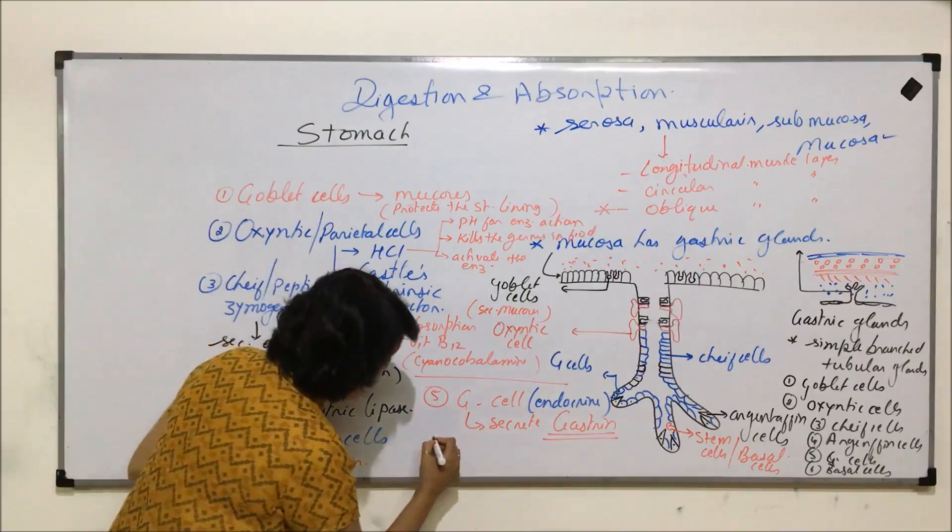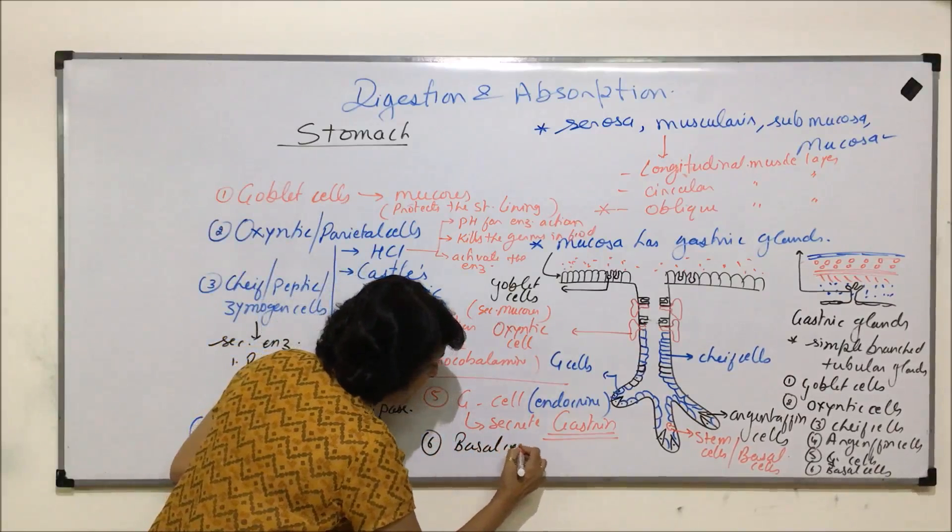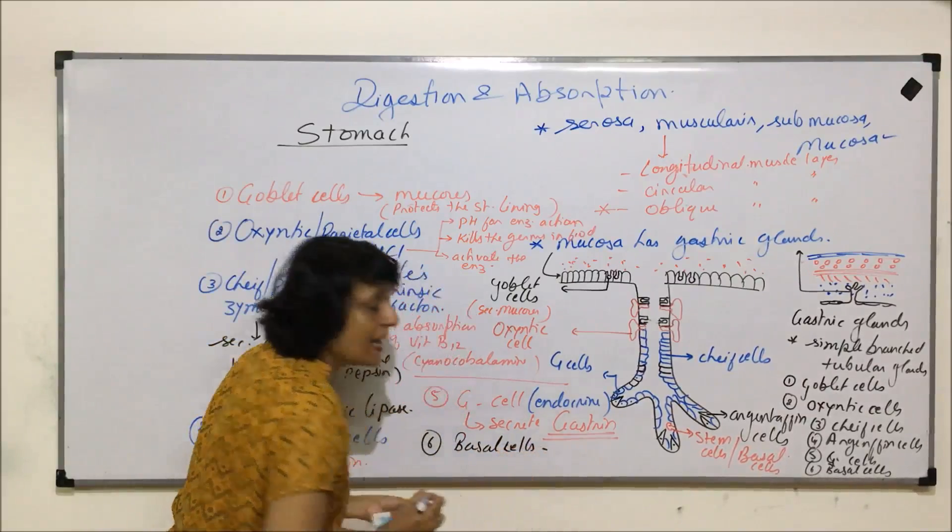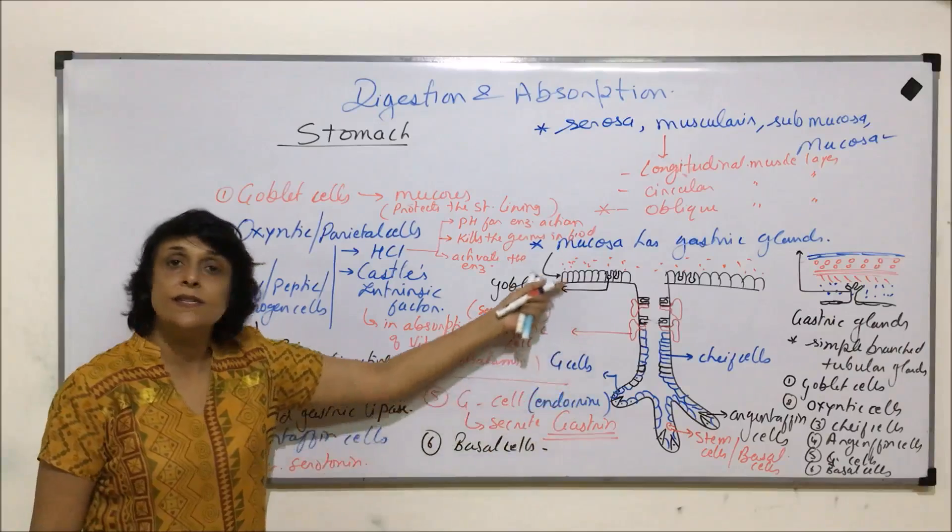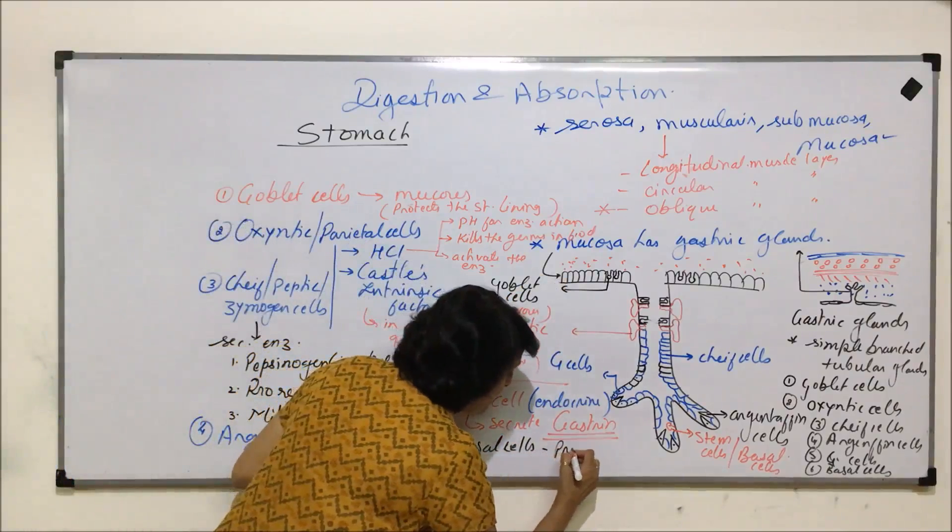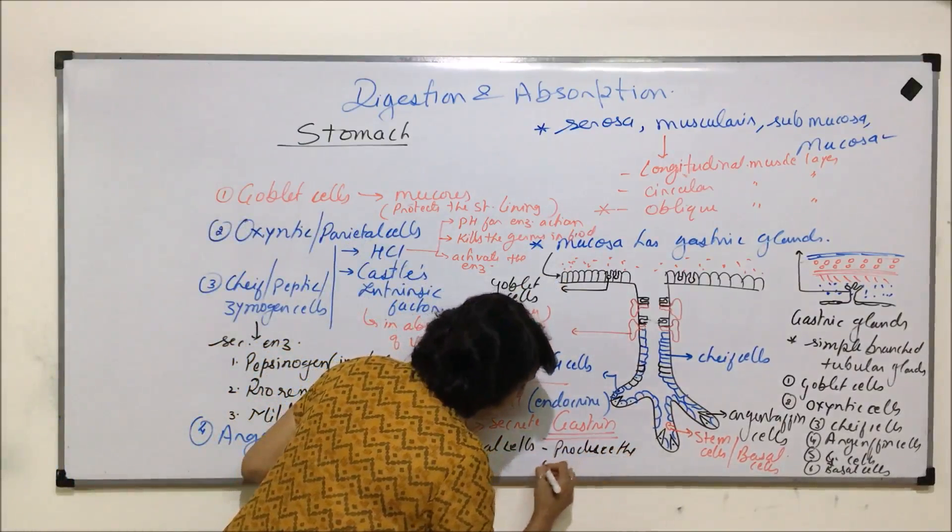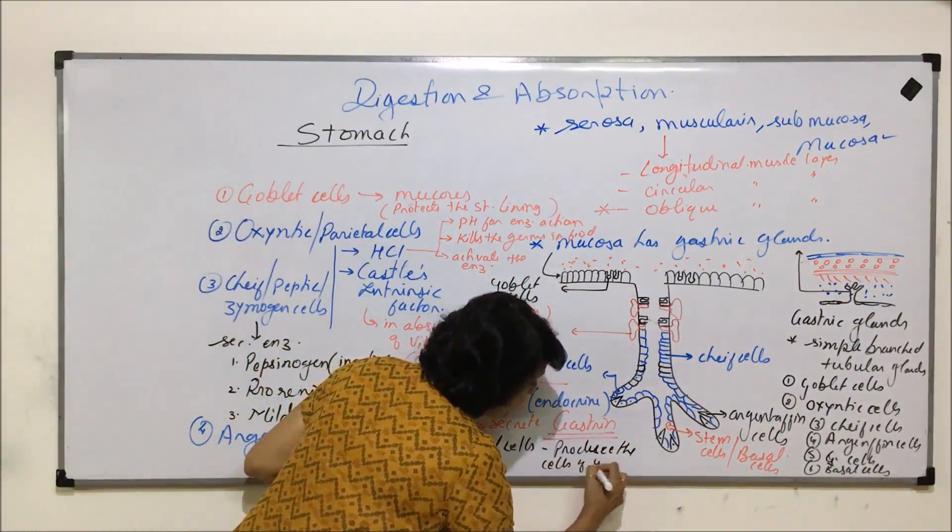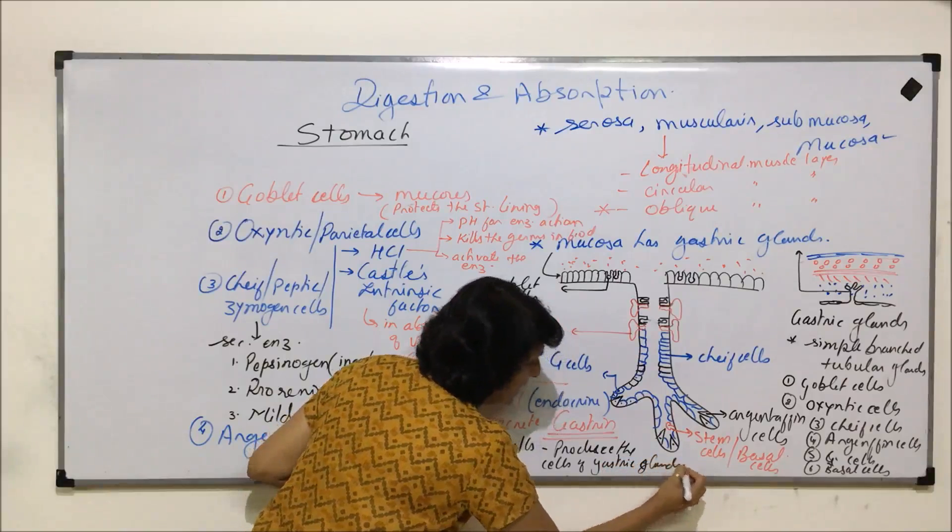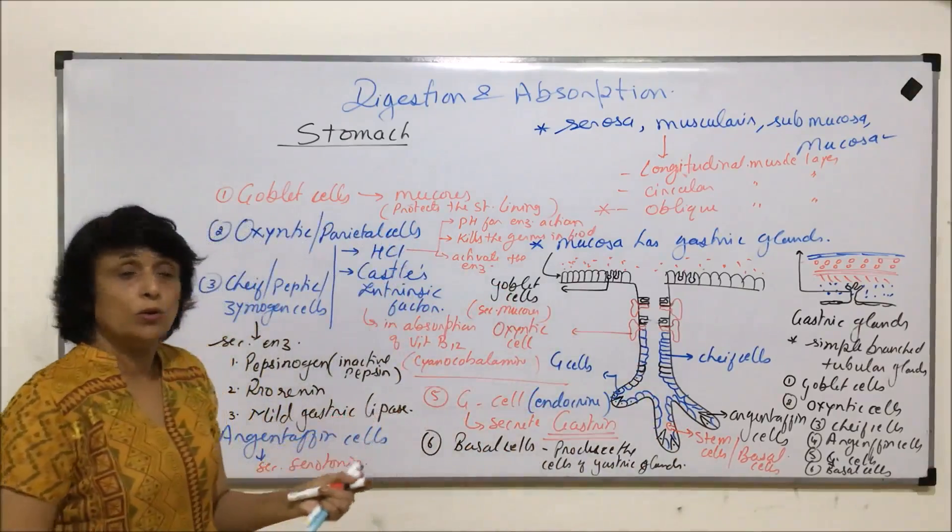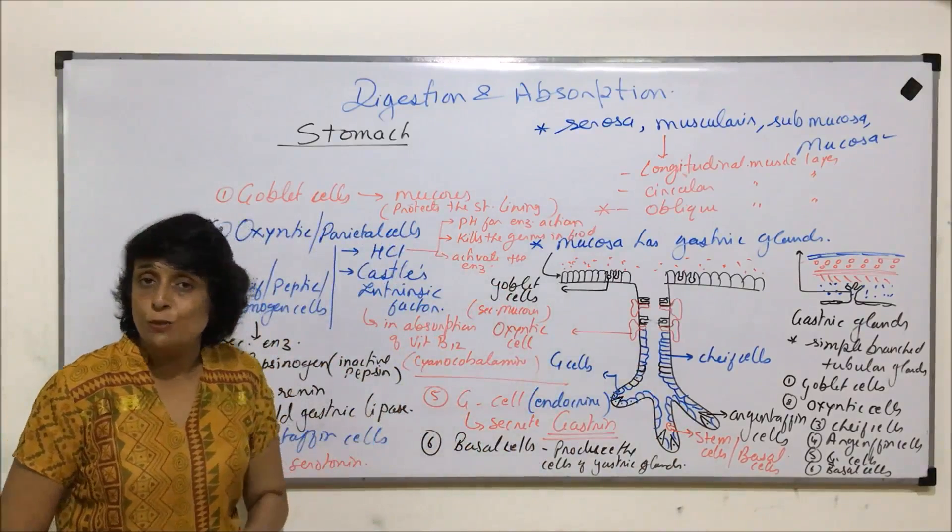And the sixth one which we have written, these are basal cells. Basal cells are actually the precursors. They are going to give rise to all other cells of the gastric glands. So they produce the cells of gastric glands. This is the function of all different types of cells which are present.